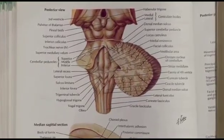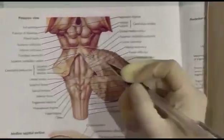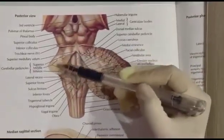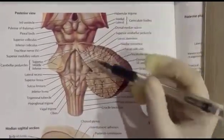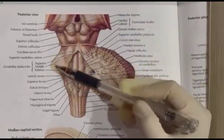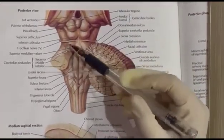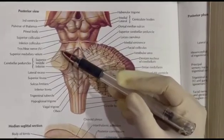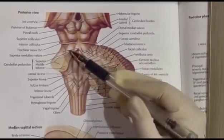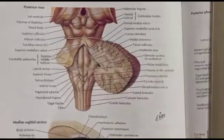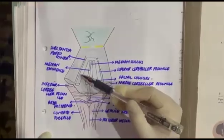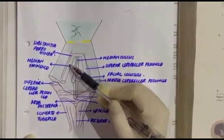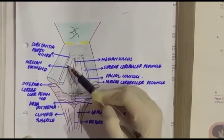Let's start with the lateral boundary. This is actually the posterior view of the 4th ventricle. The lateral boundaries — in the cranial part — are formed by the superior cerebellar peduncle. You can differentiate here: this one is the superior cerebellar peduncle, and the cranial part is formed by it on both sides.